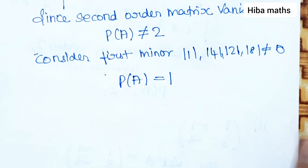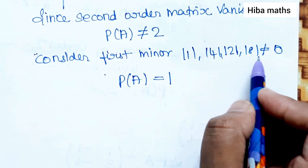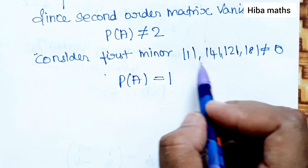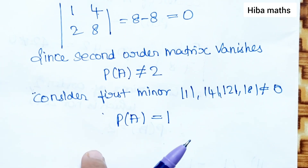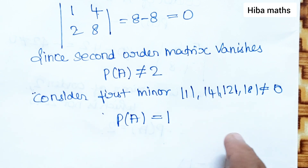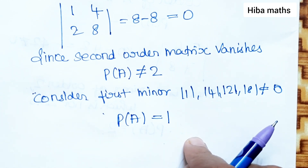To summarize the approach: if we solve the 2 by 2 matrix determinant and get 0, we reduce to check first order minors. If the single element is non-zero, the rank is 1. For a 3 by 3 matrix: first check the 3 by 3 determinant; if 0, check 2 by 2 minors; if those are also 0, check first order minors.